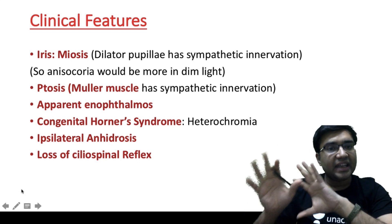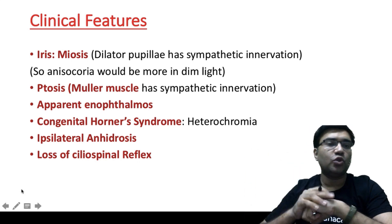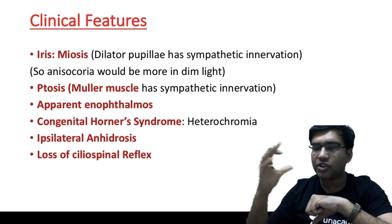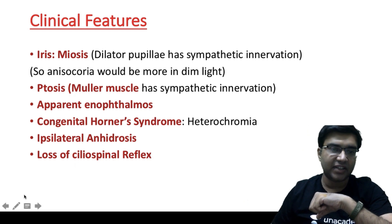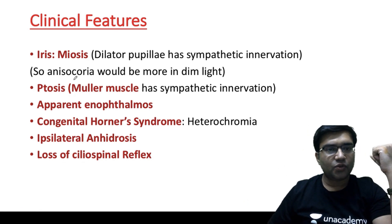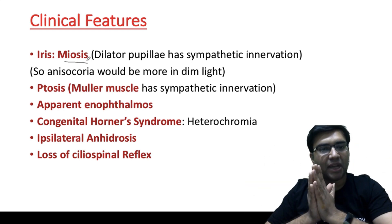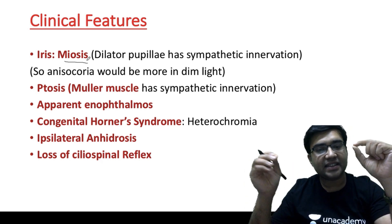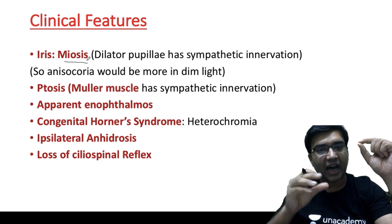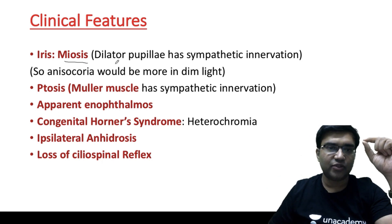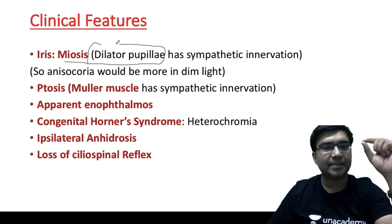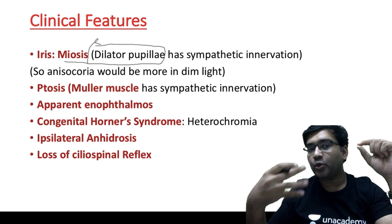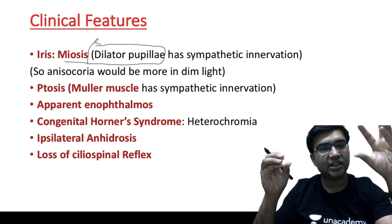The clinical features of Horner syndrome would be those functions of the eyeball which have sympathetic activity. So first of all, there is miosis — meaning the pupil would be constricted. Why? Because there is sympathetic denervation of the dilator pupillae. As you know, the dilator pupillae has sympathetic innervation. So whenever there is Horner syndrome, the dilator pupillae cannot act and the patient has a small pupil.